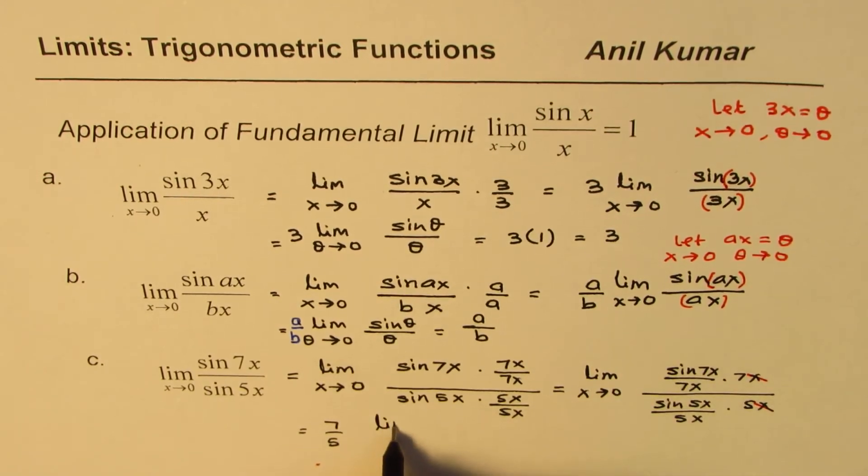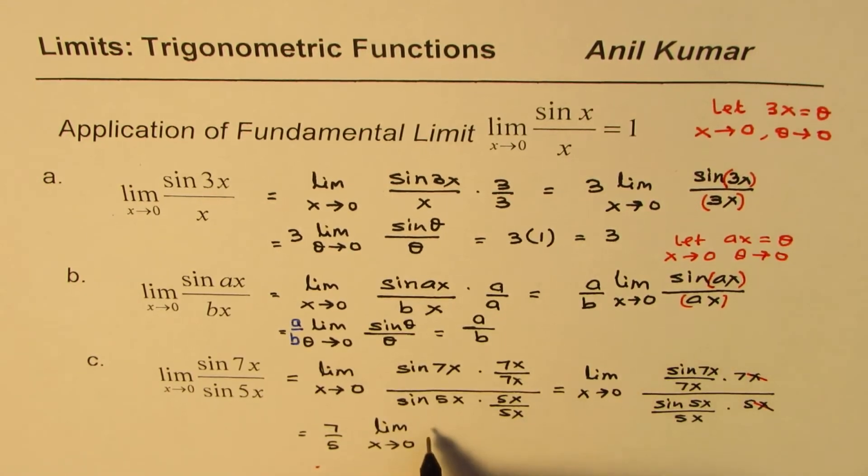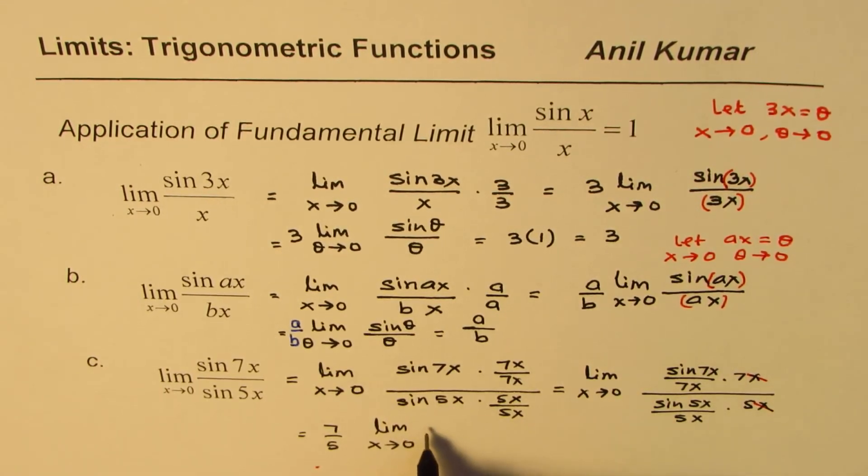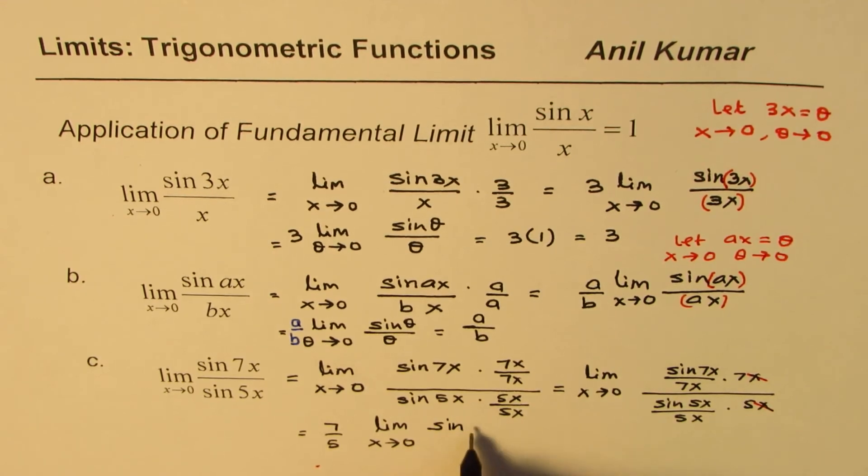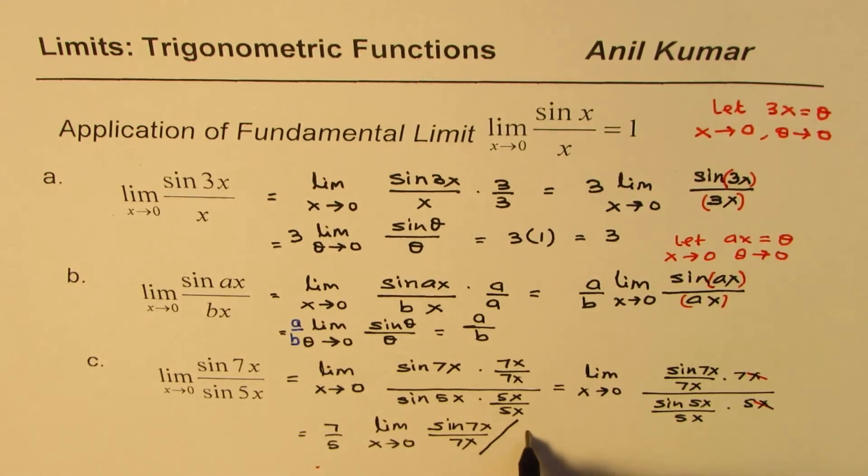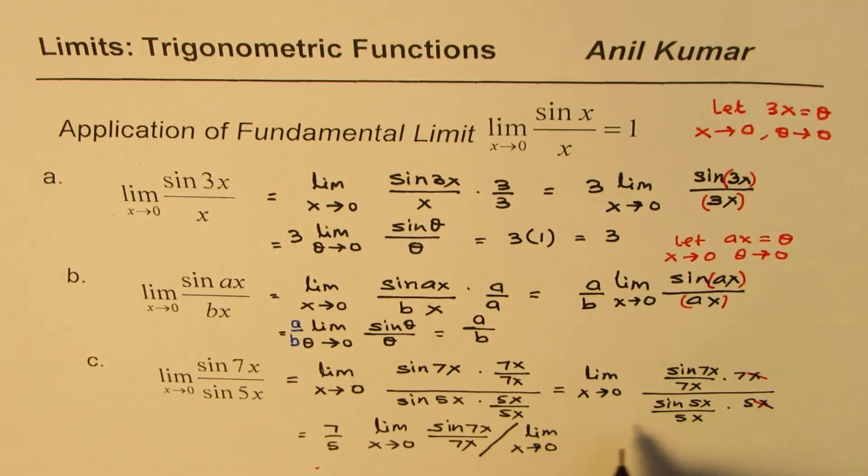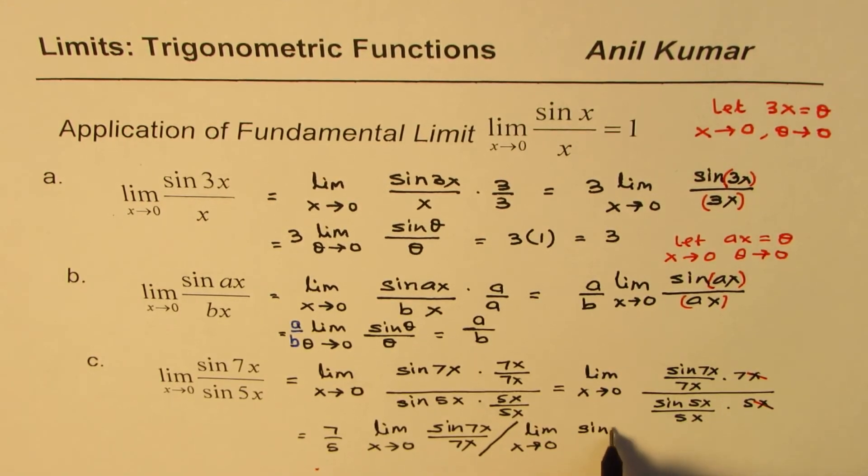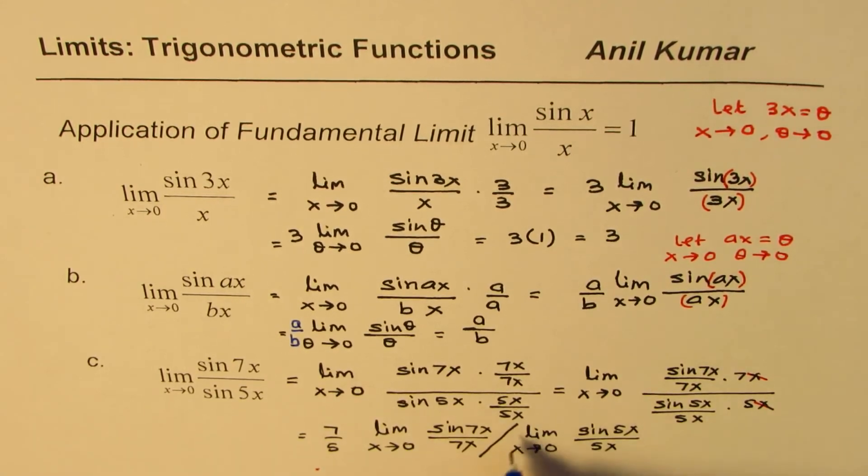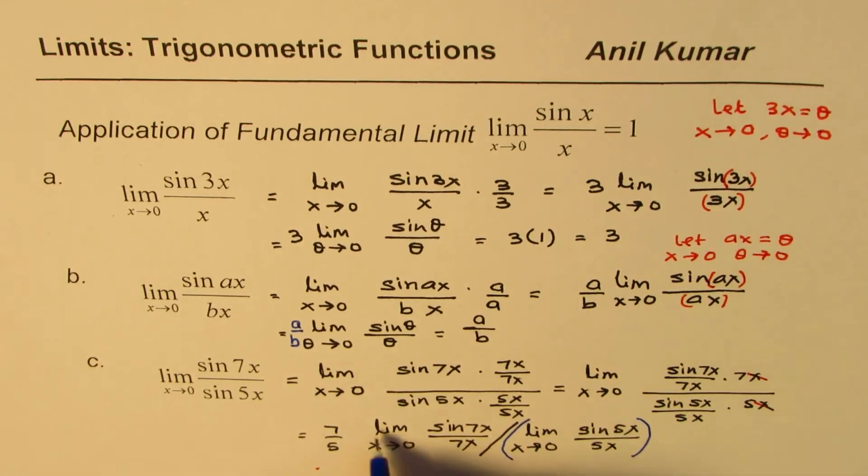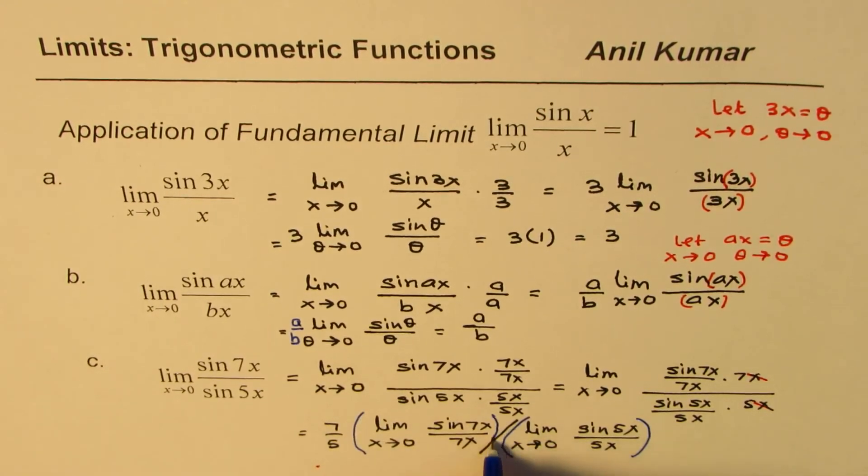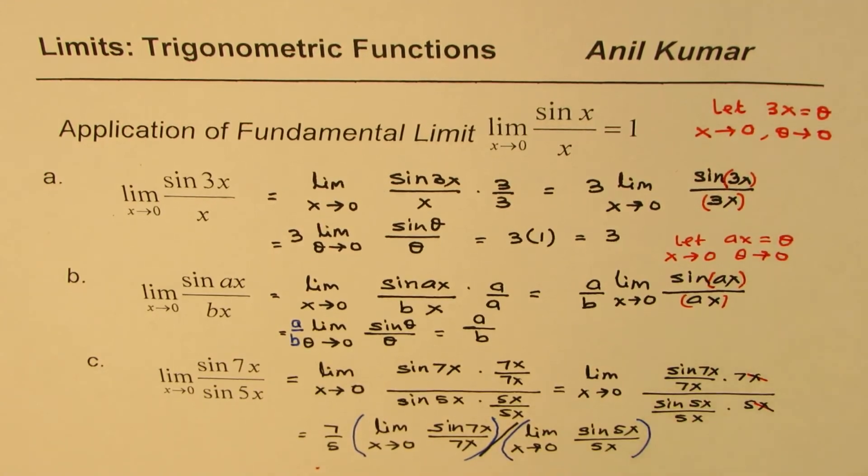So we are left with 7 over 5. Let me write this as limit x approaches 0 for the numerator part, which you could write sine 7x over 7x, divided by limit x approaches 0 for the denominator part, which is sine 5x over 5x. Let me write these in brackets. So that's the denominator part. This is the numerator part. So you found limit for both numerator and denominator.